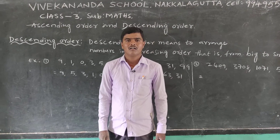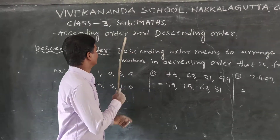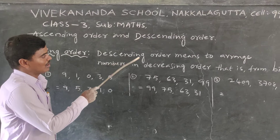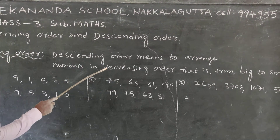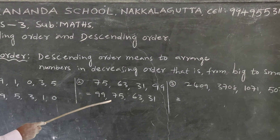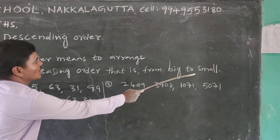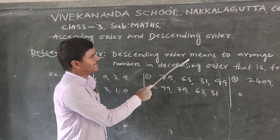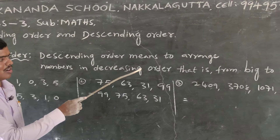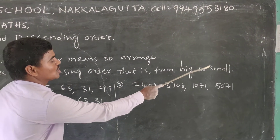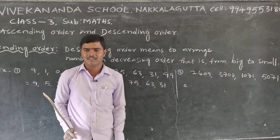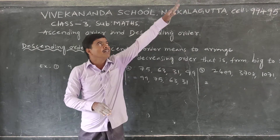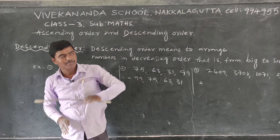Ascending order is finished. Now, second topic — descending order. What is descending order? Descending order means to arrange numbers in descending order, that is from big to small. Descending order means decreasing — big to small.